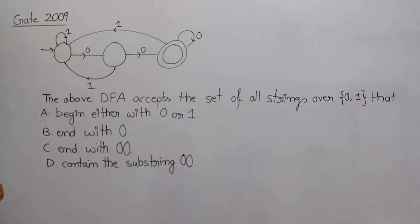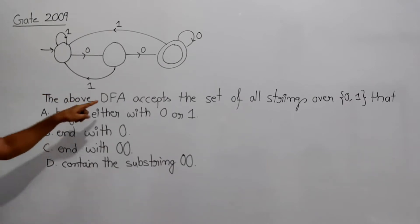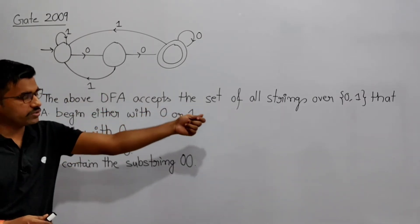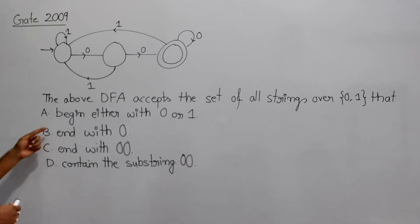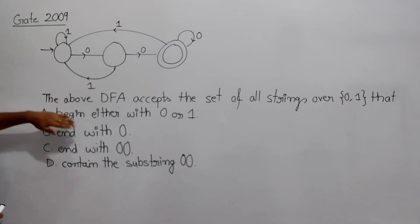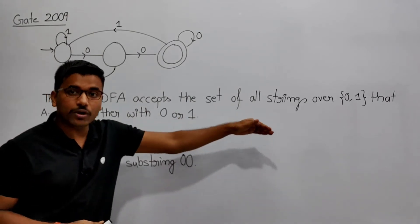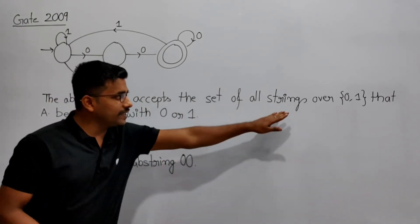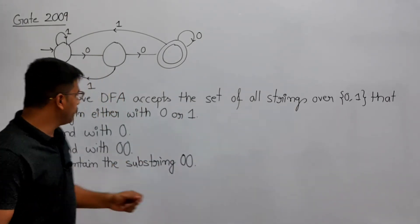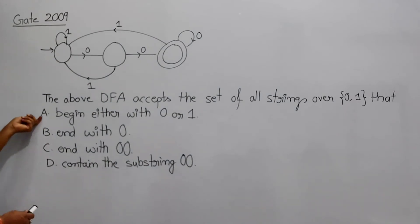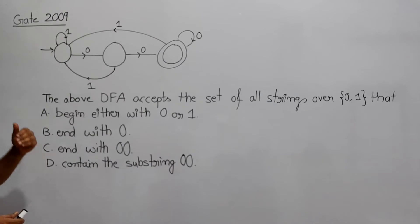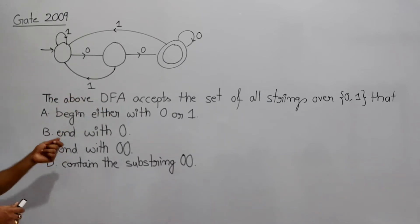Now see GATE 2009 question — it is from the topic Deterministic Finite Automata. It is saying that the final state of the DFA accepts all strings over {0,1}. They are asking what is the language accepted by this DFA, with options A, B, C, and D.